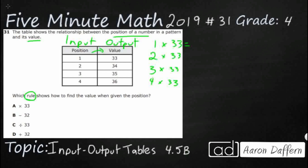So 1 times 33 — yes, that is a check. 2 times 33 — oh, that is not going to work. That's 66, so that's too large. 3 times 33, way too large — that's 99, and we're supposed to get 35. And then 4 times 33 is going to be 132. So it started out good, but A is not going to work simply because it only works for the first.